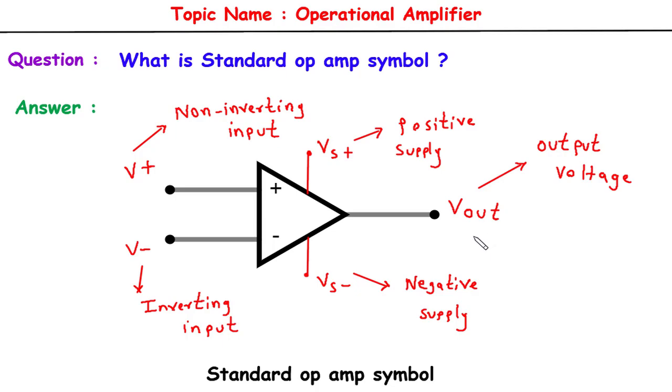By now, you should have gained a deeper understanding of the standard op amp symbol and its functionality. Remember, this symbol represents the non-inverting terminal on the upper side, the inverting terminal on the lower side, and includes symbols for the positive and negative supply voltages, as well as the output voltage, Vout. This knowledge is essential for effectively interpreting and designing op amp circuits.